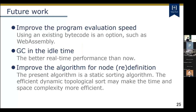I'd like to explain future works. First, improved program evaluation speed — currently MFRP-Level just traverses the AST, making it much slower than MicroPython in raw evaluation speed. Second, GC during idle time — if iterations are executed periodically, it becomes easier to predict idle time for GC. Third, an improved algorithm for node redefinition.